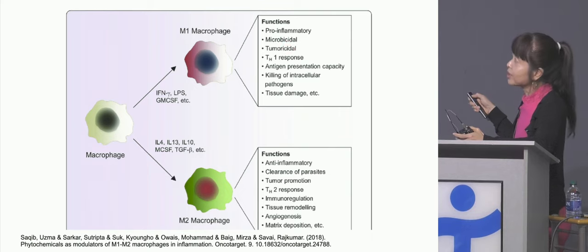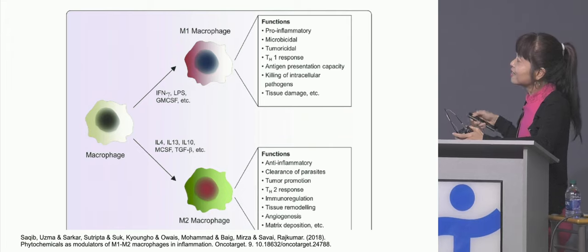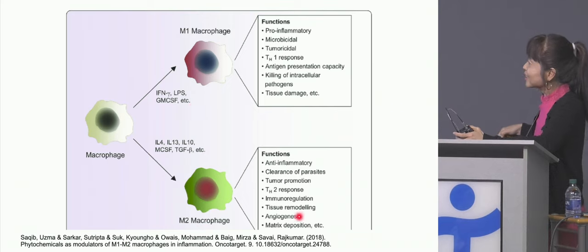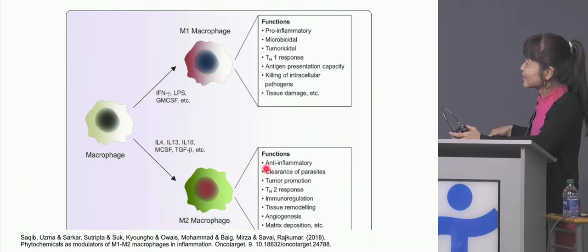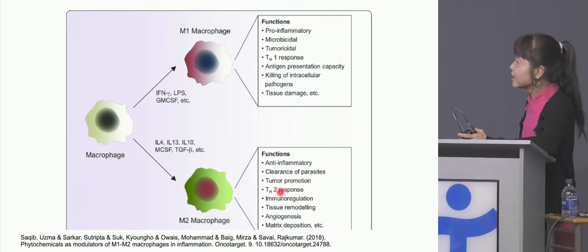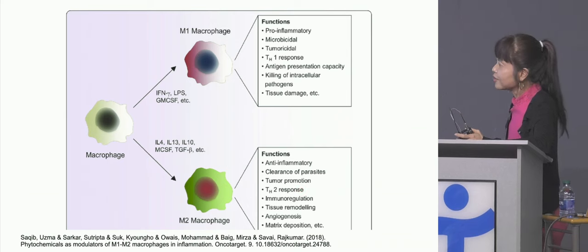You really want them in this angry Hulk state when you need to kill bacteria. Then you have the M2 state — like Bruce Banner, the quiet guy with the spectacles — and this is often thought to be anti-inflammatory, with other functions as well.